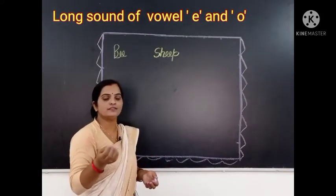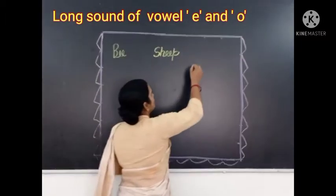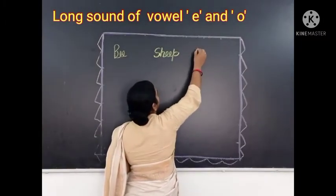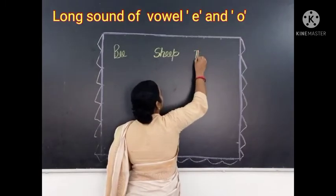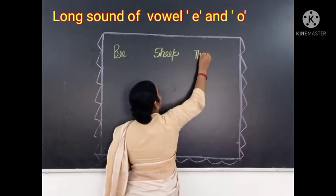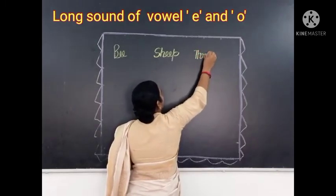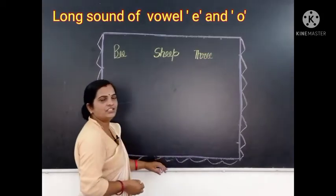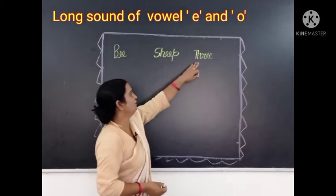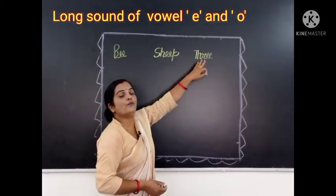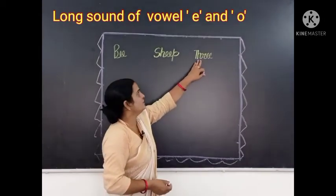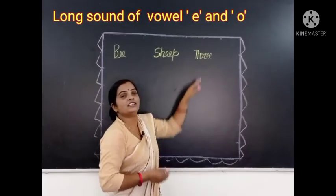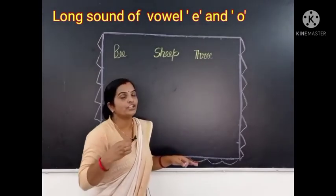Now the next word is: Three. This word is three. T-H-R-E-E. Tree. This is a long sound of vowel E word.